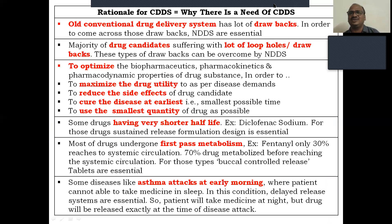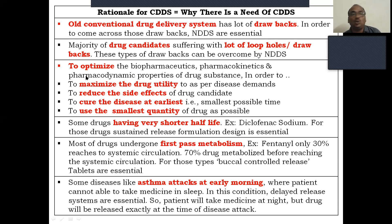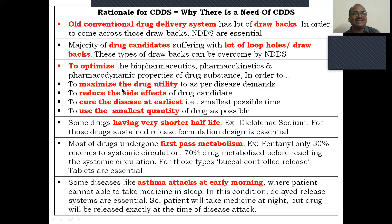The rationale — reasons why we go for CDDS (controlled drug delivery system) under NDDS: the old conventional drug delivery system has many drawbacks, and these can be overcome by NDDS. Many drug candidates themselves also have drawbacks. We also want to optimize biopharmaceuticals, pharmacokinetics, and pharmacodynamics. Pharmacy is a multidisciplinary course — physical pharmacy, pharmaceutical engineering — all are interdependent. The goals are: to maximize drug utility, to reduce side effects, to cure disease at the earliest, and to use the smallest quantity of drug.